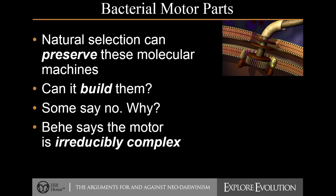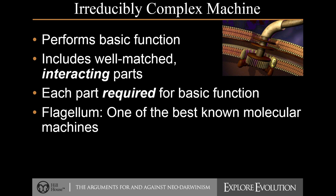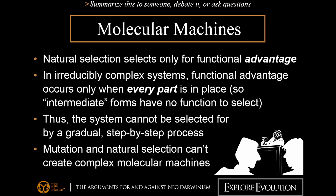A bacterium with a half-built motor that doesn't work — how does that provide a functional advantage? It seems that would actually be a disadvantage. There's a term we use to refer to structures like these: they are irreducibly complex, meaning that there are so many moving parts and all of them must be present. This complexity is irreducible — it's all or nothing. You have to have all 50 parts or it doesn't work. That raises the question of how natural selection, which only selects for things with an advantage, could produce an intermediate form with no function.